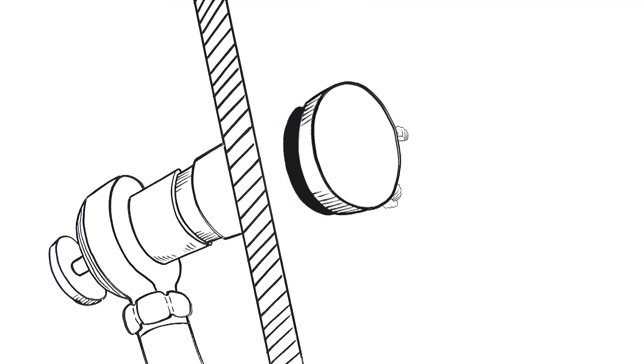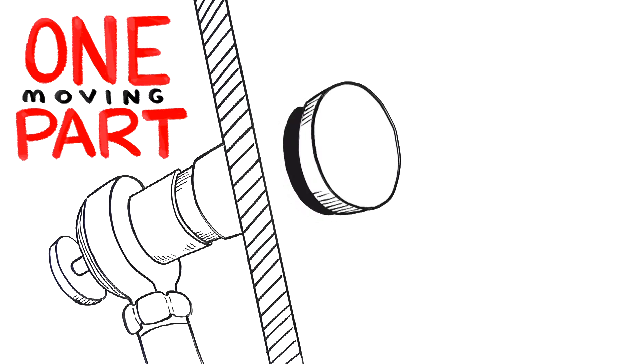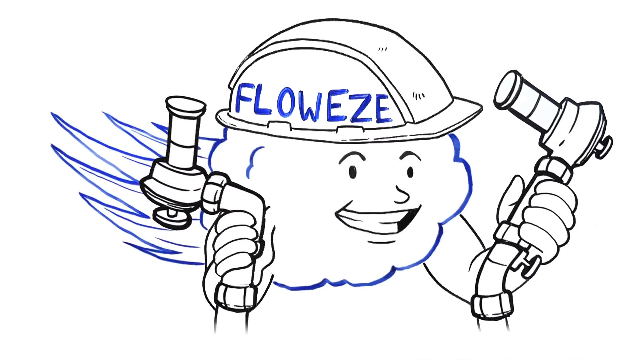And by the way, an AirSweep unit only has one moving part, so it's easy to run and maintain. It's a simple solution with amazing results thanks to me, Flowees.